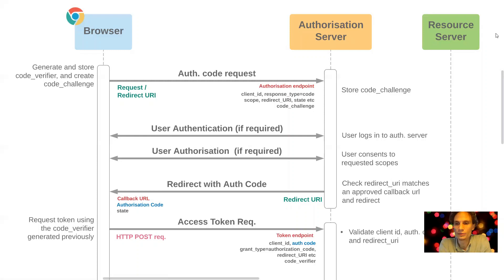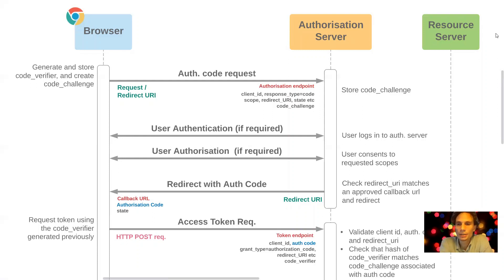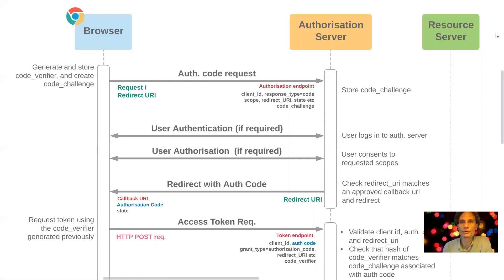The authorization server checks the client ID, verifies the auth code is one that has been issued, and checks that the redirect URI matches the original code request. It also hashes the code verifier and checks that the Base64 version of that hash matches the code challenge submitted in the authorization code request. This gives confidence to the authorization server that the access token request is bound to the original authorization code request.